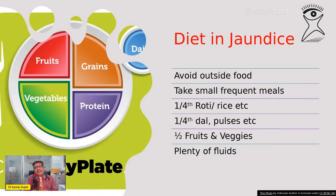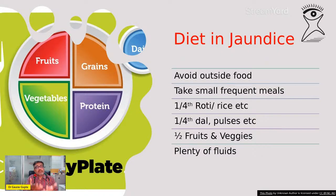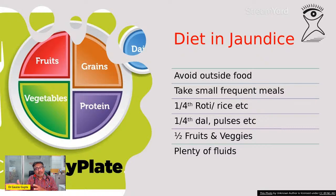Jaundice ke andar bhookh bilkul mar jati hai. The child refuses to eat and in fact they end up losing a few kilos of weight. So jab bachcha bilkul nahi kha raha, toh hume kya karna hai? Agar zabardusti khilaenge, immediately bachcha vomit kar deta hai. So the best thing is to give small and frequent meals — thoda thoda khilate rahein aur ek do ghante ke baad bachche ko poochte rahein ki thoda bahut khayega ki nahi.